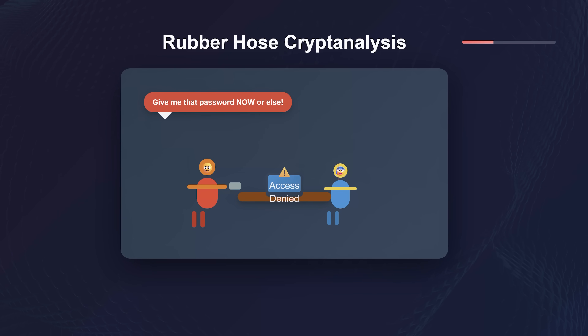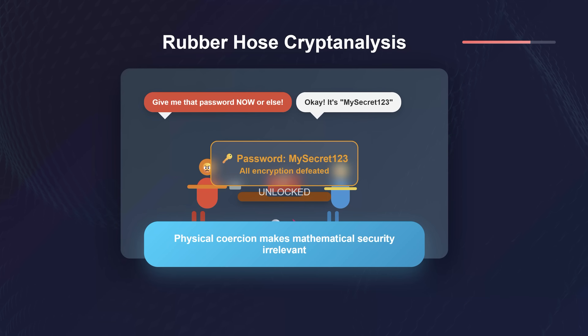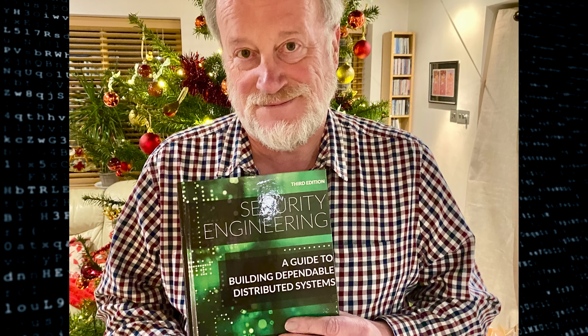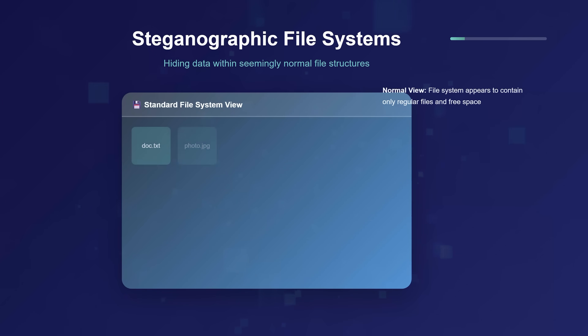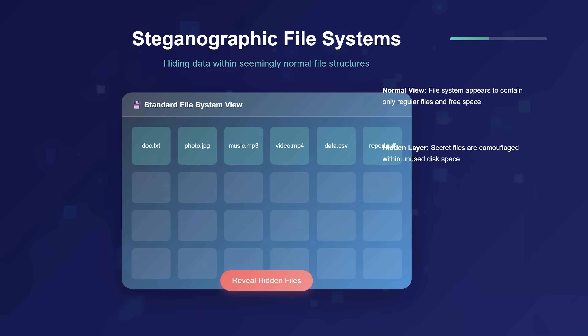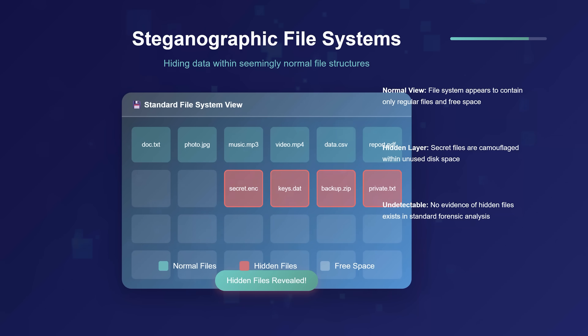The charming practice of beating encrypted keys out of people with actual rubber hoses. In 1997, Ross Anderson, Roger Needham, and Andy Scheimer formally introduced the idea in their paper, the Stagnographic File System. Their system proposed a method where multiple encrypted files could coexist on the same physical storage with different passwords, unlocking different layers of data — simple, but really powerful.